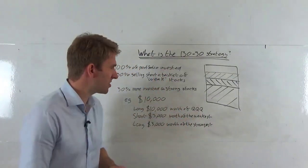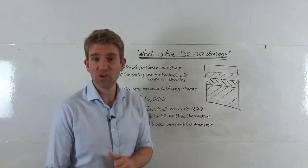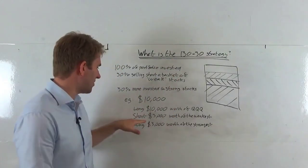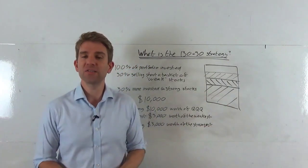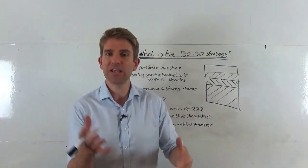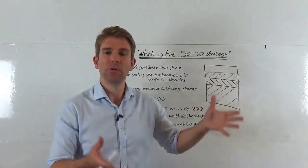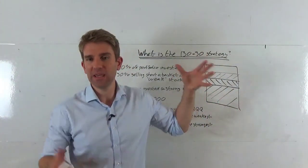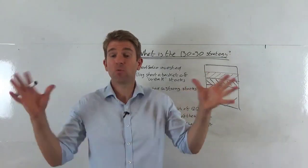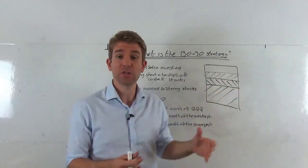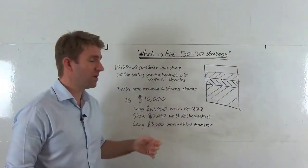But we also say, hey, this is not the 130 strategy, we need to do some extra stuff. So we now short $3,000 worth of the weakest stocks. Whatever we consider those to be in that index, it could be Apple, it could be Amazon, it could be any stocks that are in that index that we consider to be weak. I'm not saying they're weak, but we just pick out those and we'd short $3,000 worth.